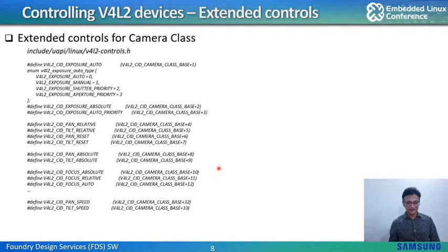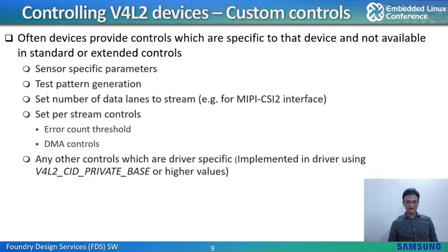This allows multiple controls within a class to be grouped together as an array and configured by applications. Aside from the controls available in the framework, depending on the system, sometimes additional controls are required. These are defined using custom control IDs. For capture devices, this can be for specifying sensor parameters, controlling test pattern generation, setting the number of data lanes on a MIPI-CSI2 interface, setting per-stream controls such as error handling or DMA controls for each stream, or any other driver-specific controls.